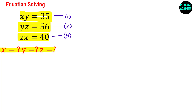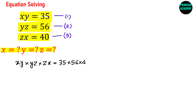So how will you solve this problem? There can be many methods. One of the easiest methods is to multiply all three equations together. If you multiply them, on the left-hand side you will have XY multiplied by YZ multiplied by ZX, and on the right-hand side you will have 35 multiplied by 56 multiplied by 40.